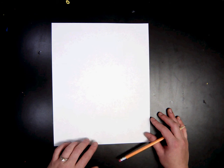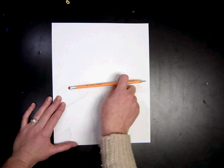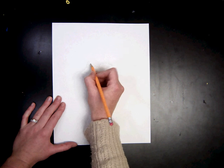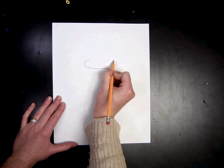Now we're first going to start with an oval. I'm going to put it a little bit above halfway on my page. Pretty big oval.